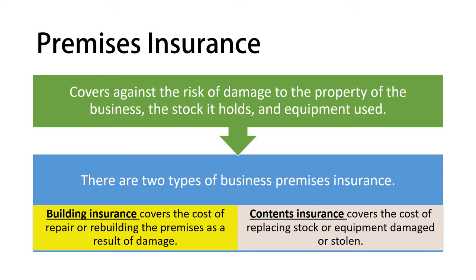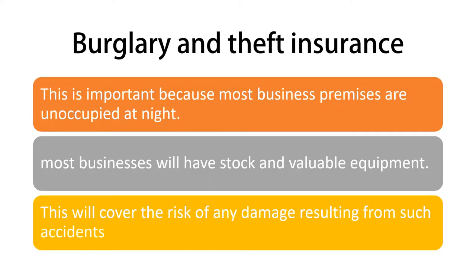The second type is content insurance, which covers the cost of replacing stock or equipment that is damaged or stolen. The insurance company will assess and evaluate the cost of damages to your stock and equipment and pay compensation so you can restock your products. Content insurance covers the things inside your building, whereas building insurance covers only the building itself.